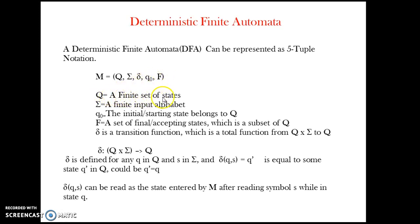Where Q is equal to finite set of states, sigma is the finite input alphabet, Q0 is the starting state which belongs to Q, and F is the final state which is also called the acceptance state. A final state may be single or more, but the initial state must be only one. The final state is also a subset of Q.